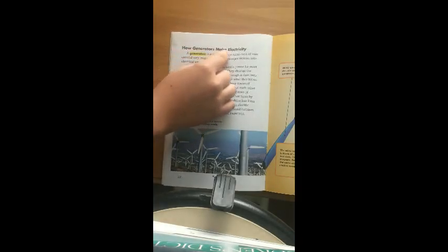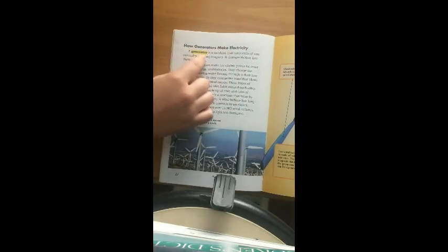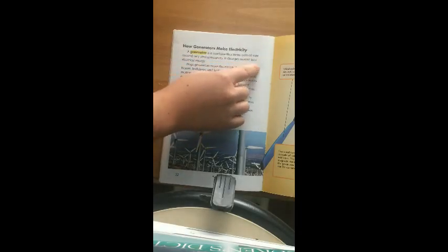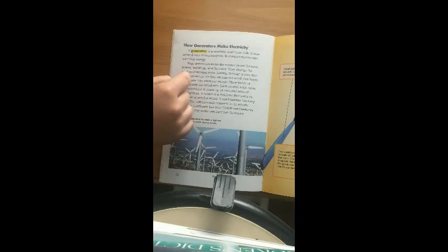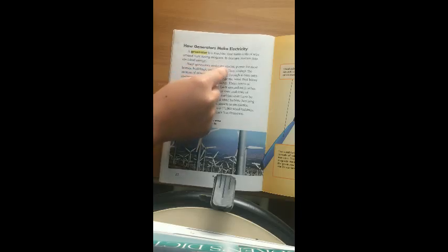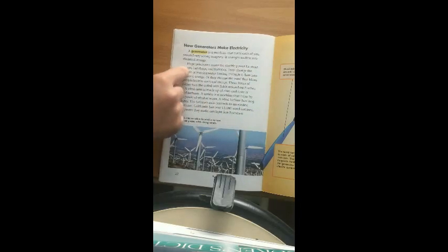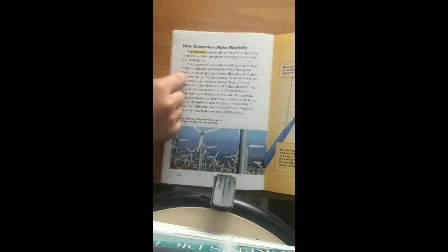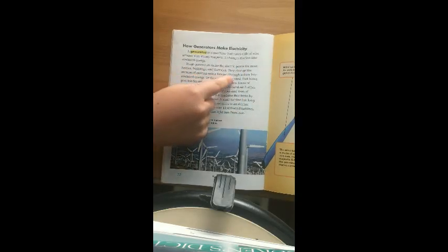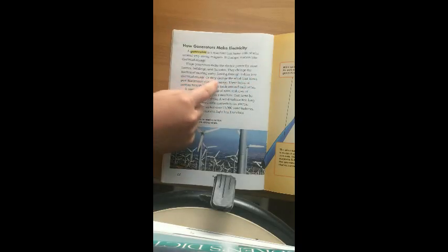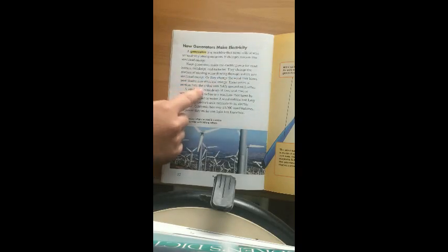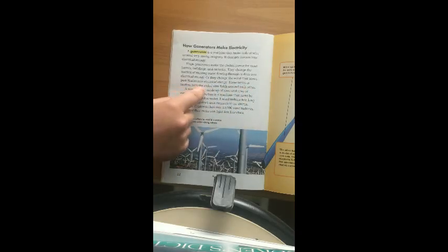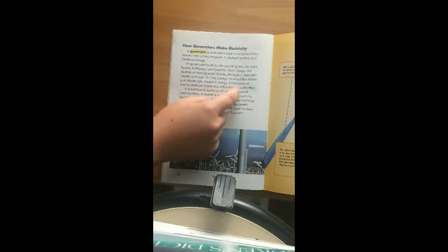How generators make electricity? A generator is a machine that turns coils of wire around very strong magnets. It changes motion into electrical energy. Huge generators make the electric power for most homes, buildings, and factories. They change the motion of moving water flowing through a dam into electrical energy. Or they change the wind that blows past blades into electrical energy. These forces of motion turn the coiled wire fields around each other.